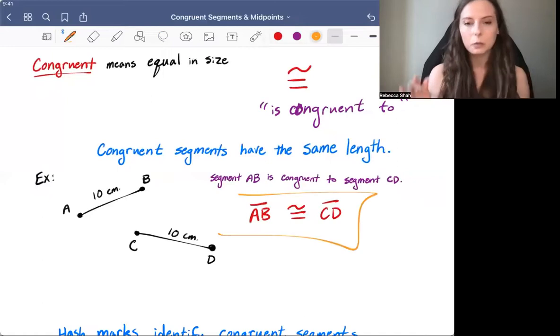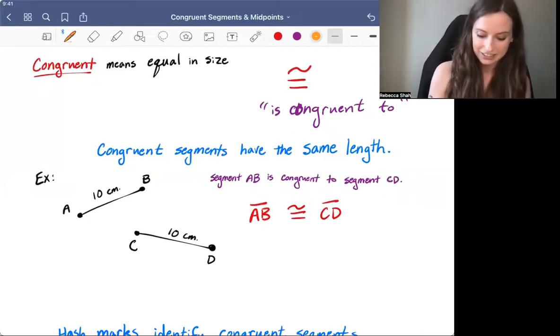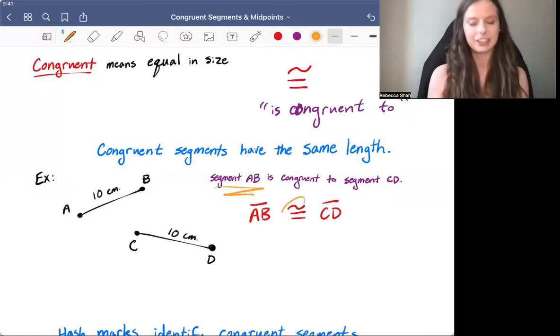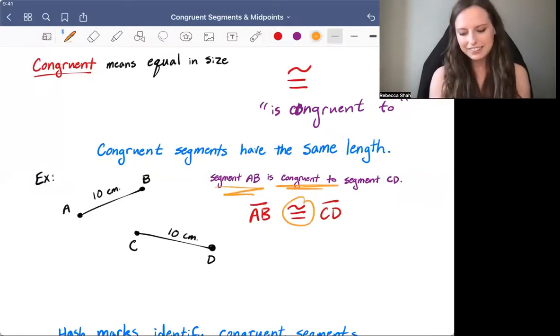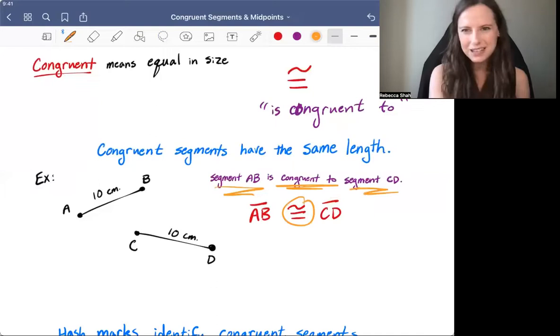Now, believe it or not, what I just wrote out is a complete sentence. If you break it down and look at each of these symbols, they just stand for words. This symbol stands for segment AB, there's our 'is congruent to,' and then last, we have segment CD at the end. So again, we can use these symbols to describe what we see in these geometry diagrams.